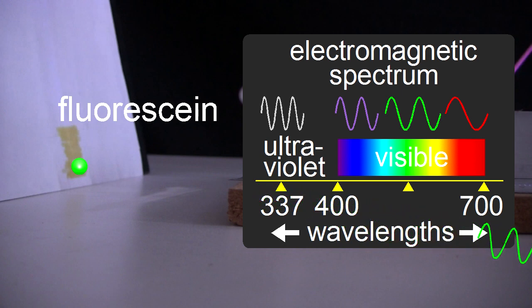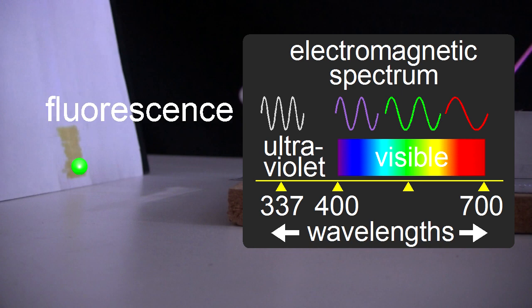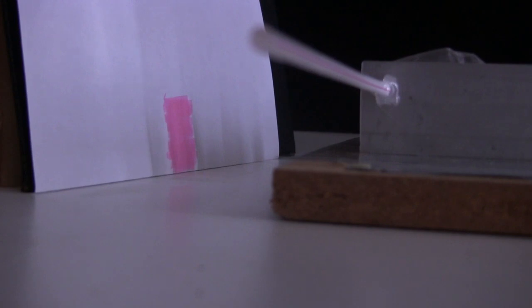And lucky for us, its wavelength is in the range of visible light, one we can see, green in this case. This process is called fluorescence. Here it is with ink from the red highlighter pen.